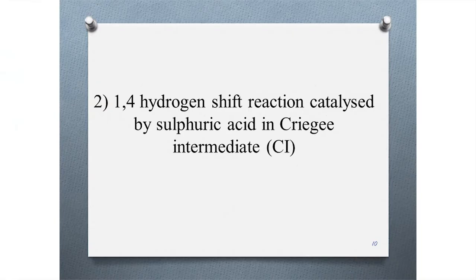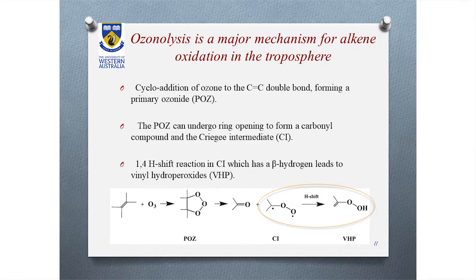The second reaction is the 1,4-hydrogen shift catalyzed in the Criegee intermediate by sulfuric acid. Ozonolysis has received much attention recently because it is the major mechanism for oxidation in the troposphere. In ozonolysis, there is cycloaddition of ozone to the double-bond carbon, forming the primary ozonide, which undergoes ring opening to the Criegee intermediate. One of the major unimolecular reactions of the Criegee intermediate as a stabilization process is the 1,4-hydrogen shift, which we consider in this project.